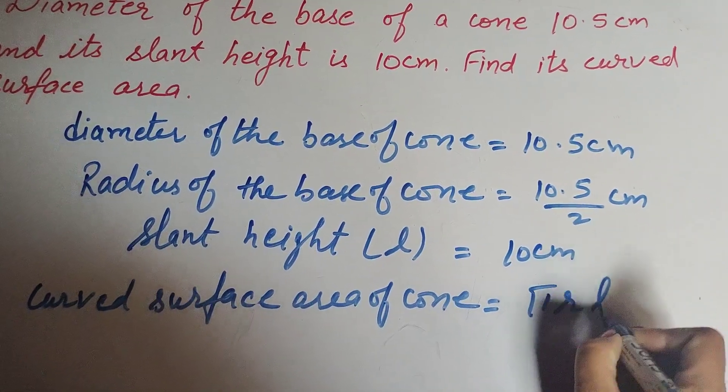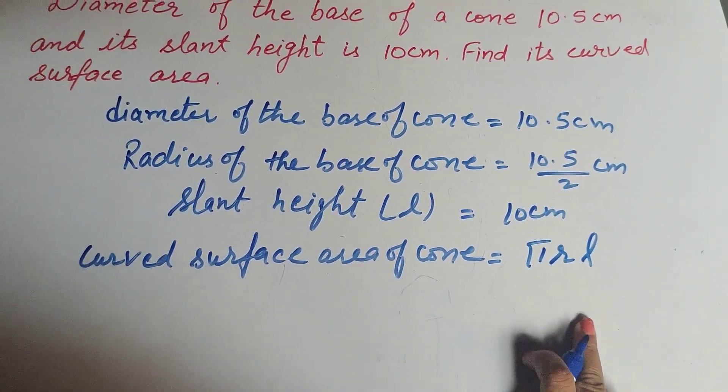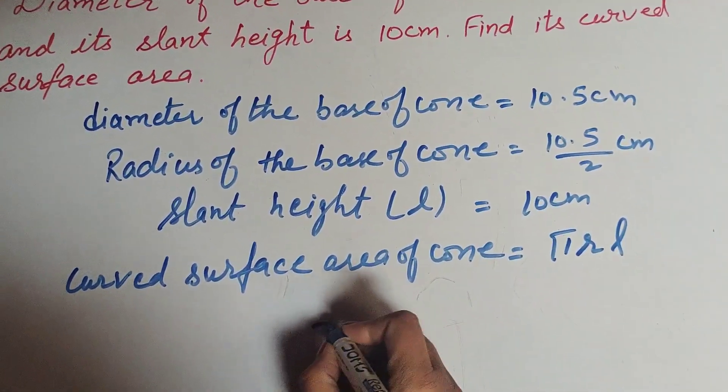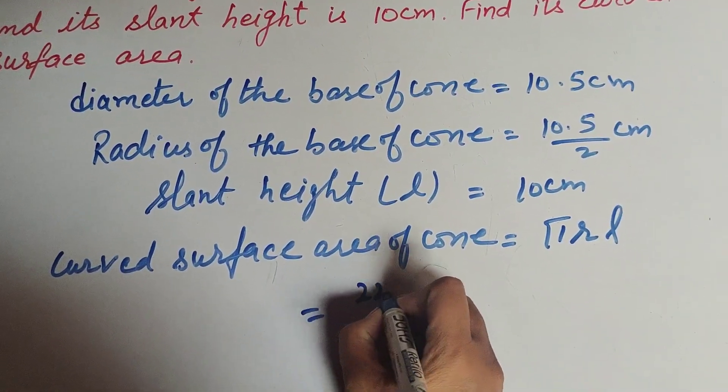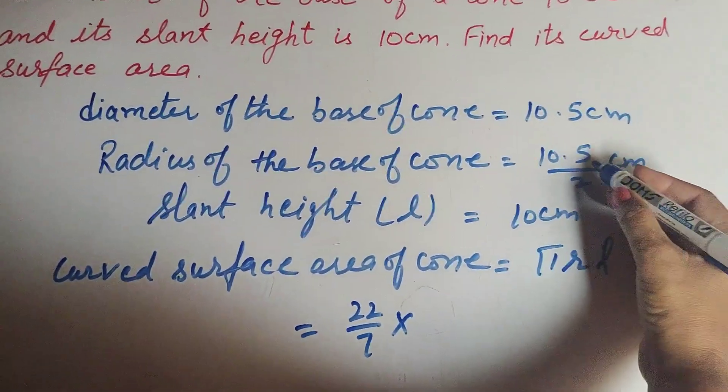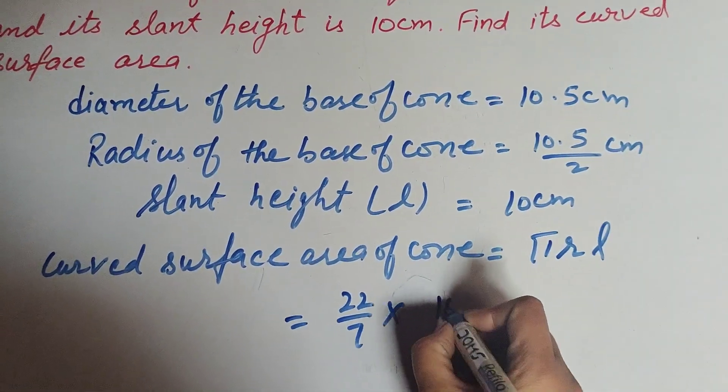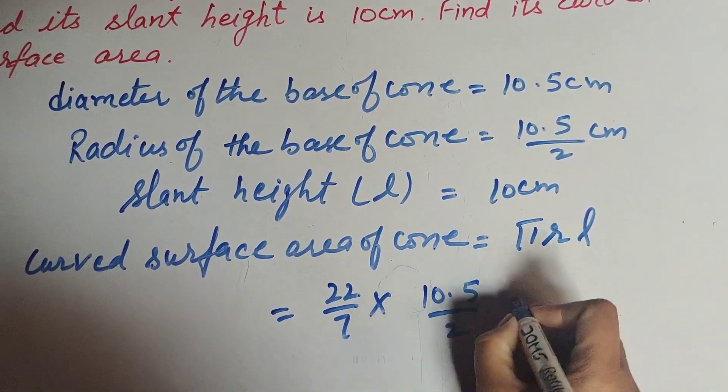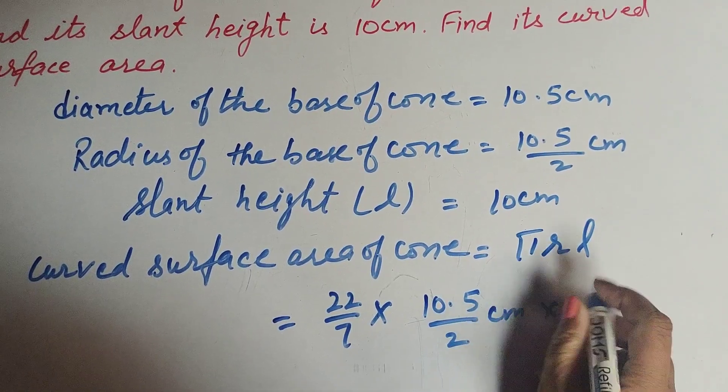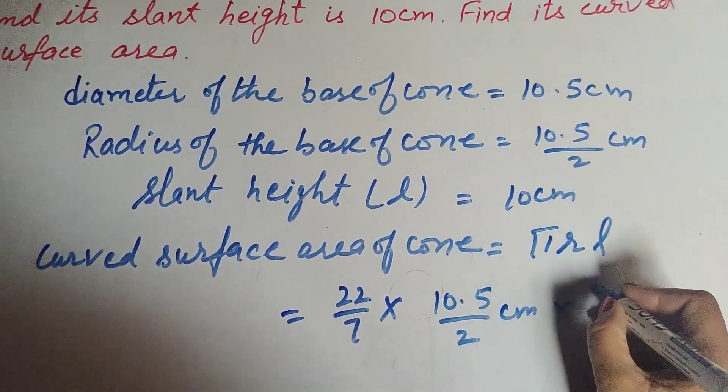In this formula, π is the constant 22/7, r is the radius that we found to be 10.5/2 centimeters, and l is the slant height, which is 10 centimeters.